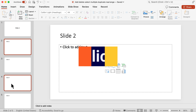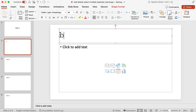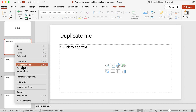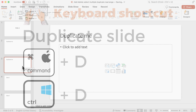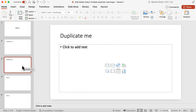Now let's look at how we can duplicate a slide. I'll go to slide 2 and rename it 'duplicate me' — as you can see, the thumbnail title in the slide panel updates to match. There are two ways to duplicate it: you can right-click and choose Duplicate Slide, and there's another copy. Or if you prefer keyboard shortcuts, use Command+D on a Mac or Control+D on Windows, and again it's duplicated.